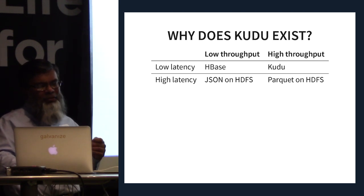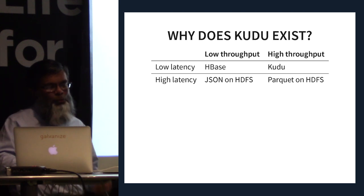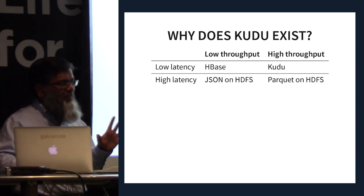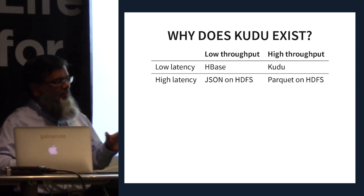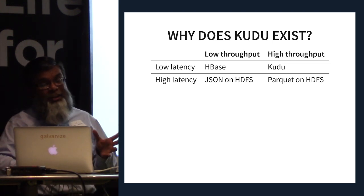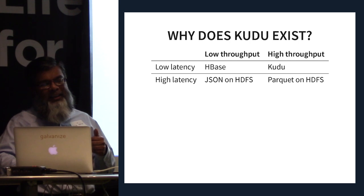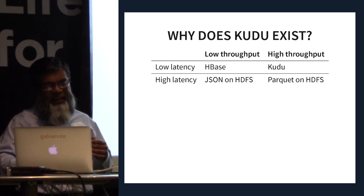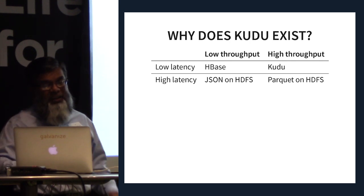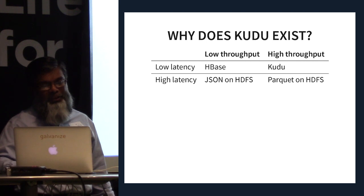Kudu sits in this sweet-spot corner of the matrix. It's generally worse than both HBase and Parquet in their individual areas of strength, but it's good enough in both areas.